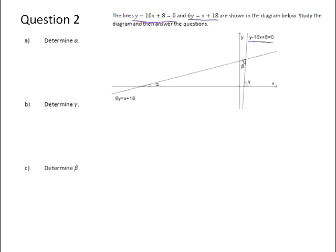So there is y minus 10x plus 8. If we just reorganize that into standard form, we add 10x to both sides and subtract 8 from both sides. And 6y is equal to x plus 18. To get that into standard form, we divide by 6.